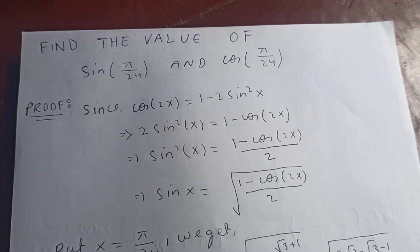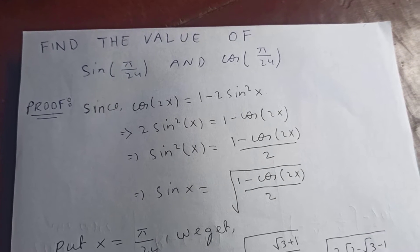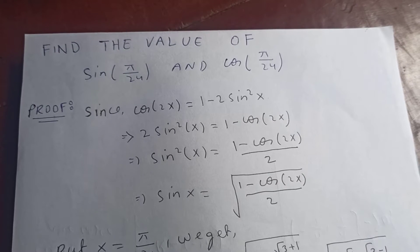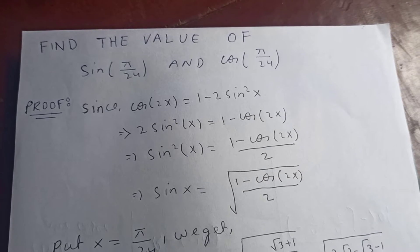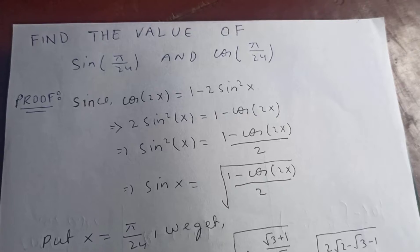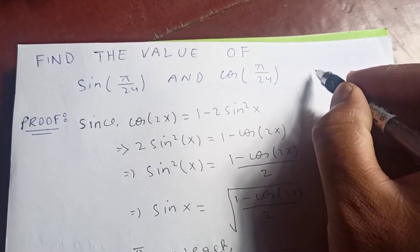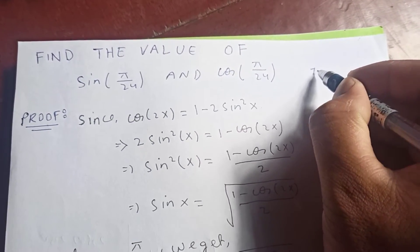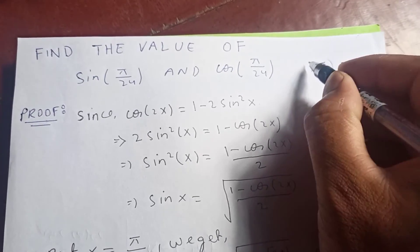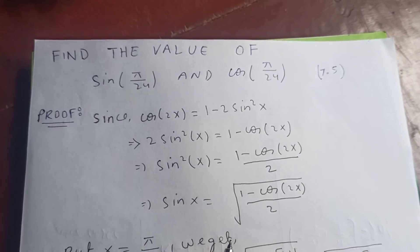Hello guys, thanks for watching my video. Today let's find the value of sine of π over 24 and cos of π over 24. This π over 24 is approximately 7.5 degrees. Now let's start.